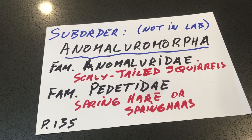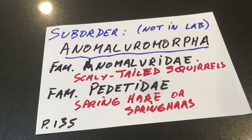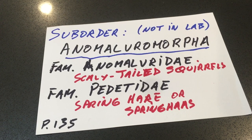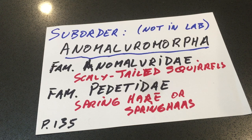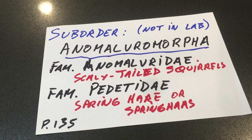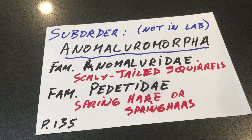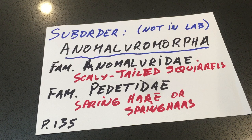They're represented by two very different body plans. They're the scaly-tailed squirrels, the Anomaleuridae, which gives its name to the suborder of course — the family Anomaleuridae. These are scaly-tailed squirrels, some of which are flying or gliding squirrels, and then there are more terrestrial species. If you just remember Anomaleuridae and scaly-tailed squirrels for one family, that's sufficient.